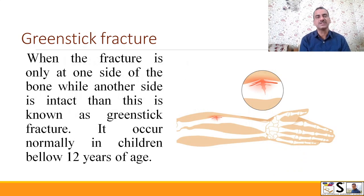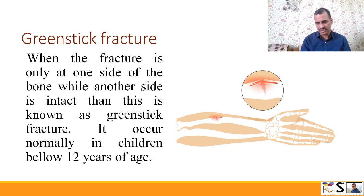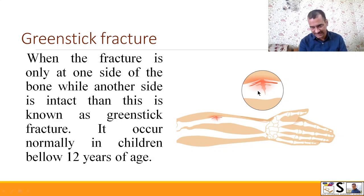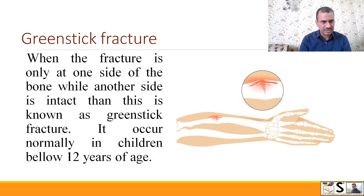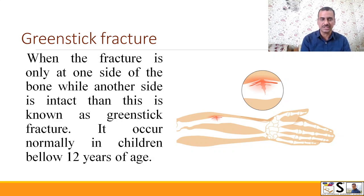Another fracture is green stick fracture. This name is given based on the green stick of wood — when we try to break it, it breaks on one side but the other side is intact. In the same way, the bones of children are like a green stick and they break mostly like this — broken on one side but intact on the other. This is known as green stick fracture and it occurs normally in children below 12 years of age.